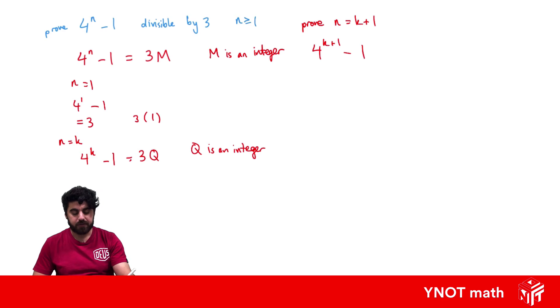So we can rewrite 4 to the k plus 1 as 4 to the k times 4 to the 1 minus 1. And we're going to go back to our assumption of 4 to the k minus 1 equals 3q. And we're going to make 4 to the k the subject.